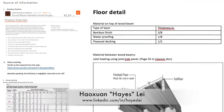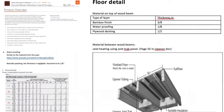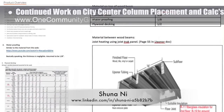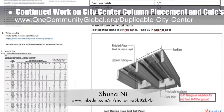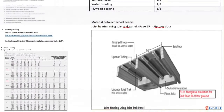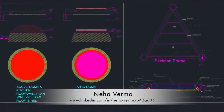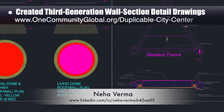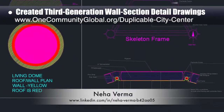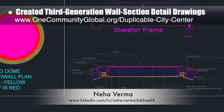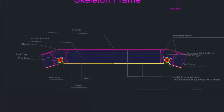Hayes Lay, structural engineer, and Choon Ani, Masters of Mechanical Engineering and Civil Engineering PhD, also continued their work on the city center column placement and calculations. This week's work focused on researching the specifics for the radiant floor heating and surfacing. Neha Verma, construction project manager with a Bachelor's of Architecture, also helped create our third generation wall section detail drawings. You can see the outline here, showing what code considers roof versus wall for a dome, and the specifics of where we are so far in the wall design details.